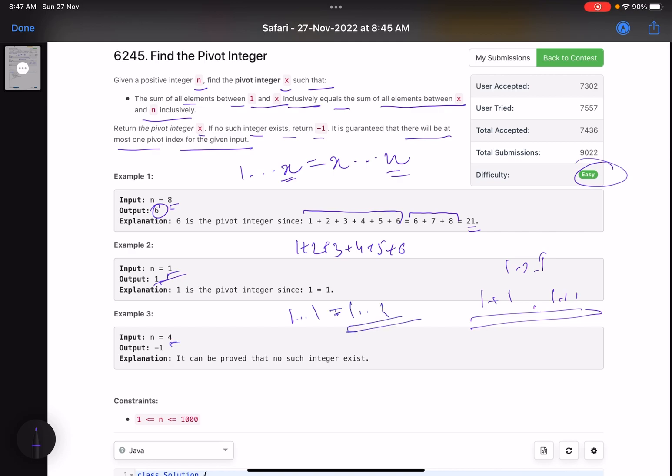What about n=4? In this case, you will find that there is no pivot integer. We'll see how we can find it.